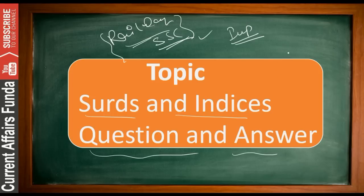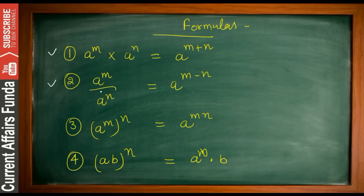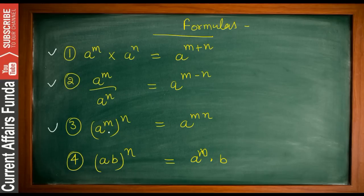Let's start with some important formulas. Formula one: a^m × a^n = a^(m+n). Formula two: a^m ÷ a^n = a^(m−n), because a^n moving to the numerator becomes a^(−n). Formula three: (a^m)^n = a^(m×n) — you multiply both the powers.